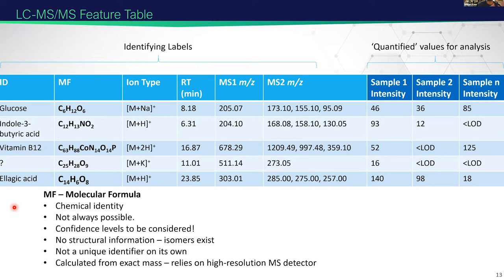We don't measure molecular formula directly — we actually infer or calculate it from the measured mass-to-charge ratio. So there's some confidence or uncertainty associated with this. Additionally, we have the ion type — as was alluded to this morning, when you're generating your ions, they form different types depending on whether there's a positive or negative charge and which ionization source you use.